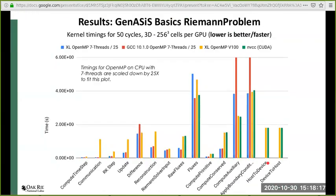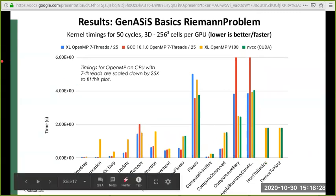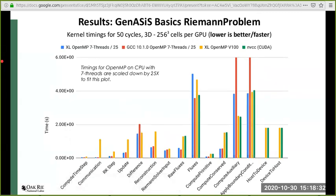Here we plot the timing for each kernel in the Riemann problem application in Genesis Basics. Since this is a timing plot, lower values are better. On this plot, we compare each kernel performance using either OpenMP threading with seven CPU cores or OpenMP offload to GPU. The first bar with light blue color in every kernel is for OpenMP threads with the IBM XL compiler on Summit. The red bar represents the same OpenMP threading with the GCC compiler. Note that the plots for CPU threadings are scaled down by 25x in order to fit this plot. So the actual timings for the kernels using CPU threading are 25x higher. The yellow bar represents OpenMP offload to the GPU with the XL compiler.